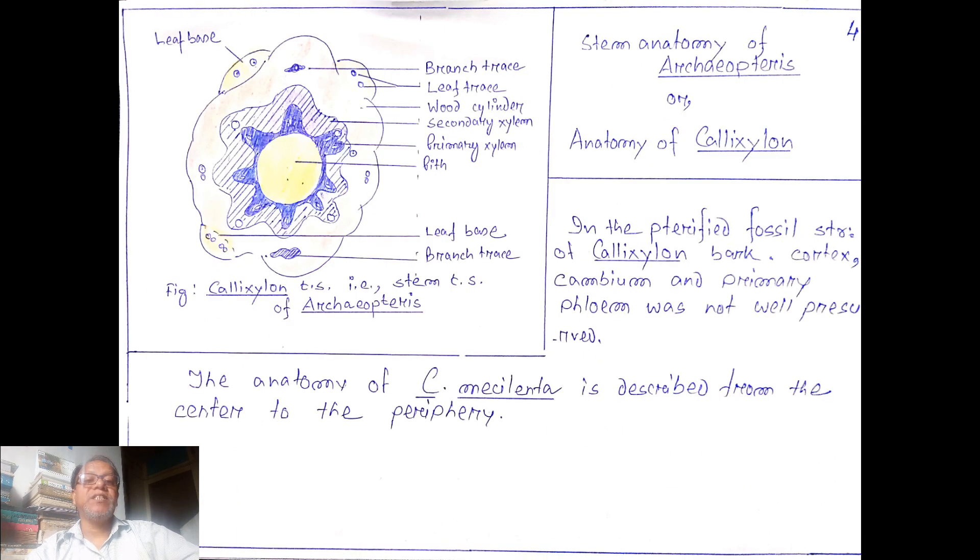In the next page we will discuss the stem anatomy of Callixylon. A nice diagram is given here. In the petrified fossil structure of Callixylon, bark, cortex, cambium, and primary phloem were not well preserved. The anatomy of Callixylon newberryi is described from center to periphery. At the center is pith, surrounded by primary xylem, then secondary xylem, then wood cylinder having few leaf traces, branch traces, and three leaf bases.